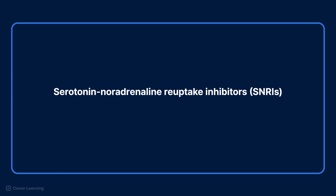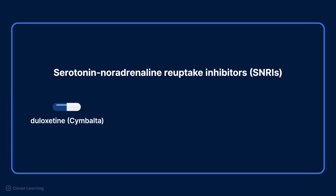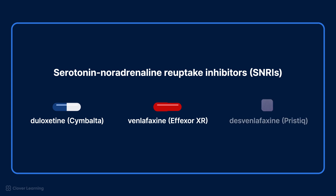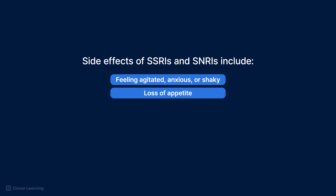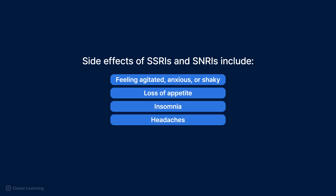Serotonin-noradrenaline reuptake inhibitors, or SNRIs, include duloxetine (Cymbalta), venlafaxine (Effexor XR), and desvenlafaxine (Pristiq). Side effects of SSRIs and SNRIs include feeling agitated, anxious, or shaky, loss of appetite, insomnia, headaches, and loss of libido.